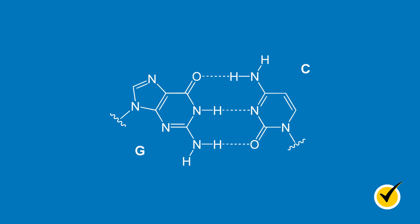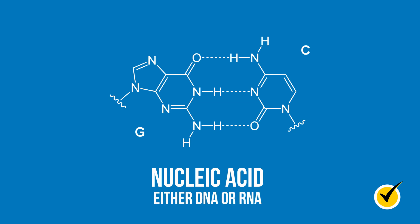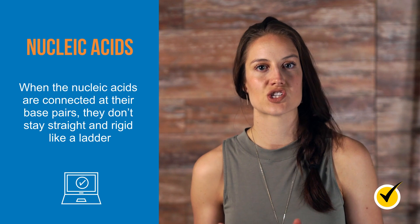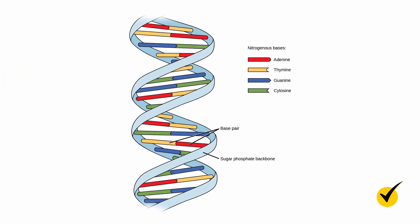When our nucleotides are connected in a long chain like this, we refer to it as a nucleic acid, either DNA or RNA. Now that we're finally at nucleic acids, one important thing to note is how the nucleotides stack together. When the nucleic acids are connected at their base pairs, they don't stay straight and rigid like a ladder. Instead, it naturally forms a helical structure, like a spiral staircase. This is its tertiary structure — the 3D form it takes as a result of everything it's made from. This form leaves it the least open to water within the cell, by having two strands connected to the bases and twisted to further reduce open space to water.